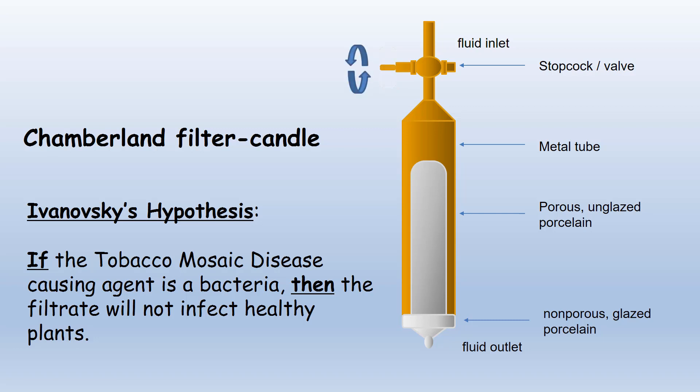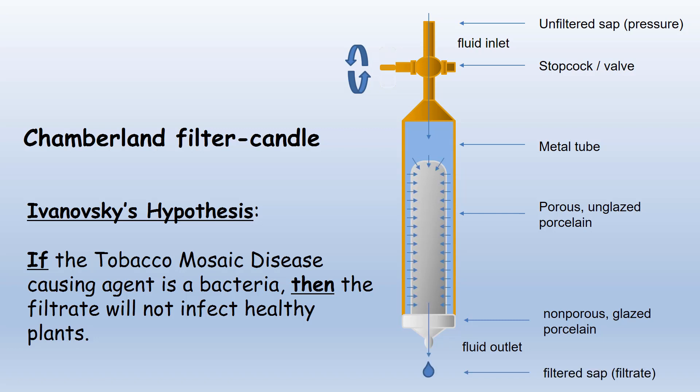So Ivanovsky injected sap from the crushed infected tobacco leaves into the metal chamber. The pressure forced the sap through the porous porcelain and out through the outlet, leaving the bacteria behind since the pores are too small for bacteria to pass through — that is, of course, if the agent is bacterial. If the disease is caused by a bacteria as he hypothesized, the filtered sap collected through the outlet would not be able to transmit disease to uninfected tobacco plants. So to test his theory, Ivanovsky transferred his filtered sap onto healthy plants and found that the filtrate did in fact spread the disease to healthy, non-infected plants.